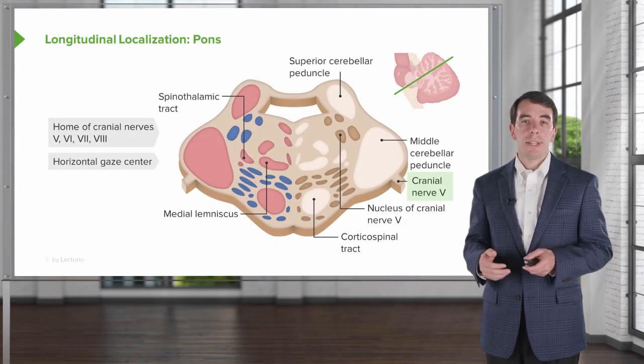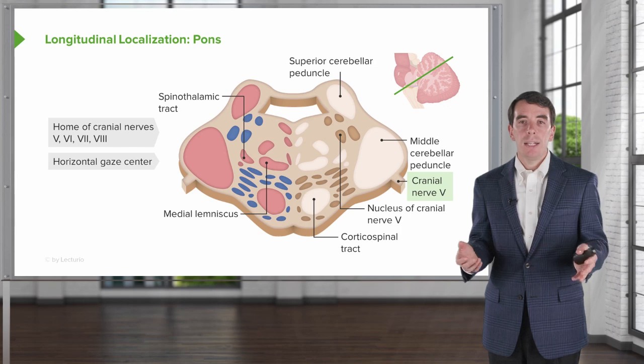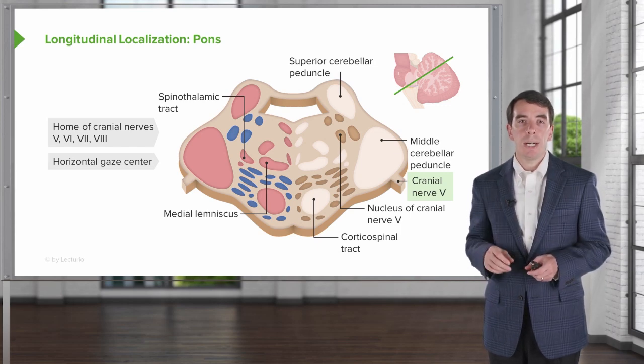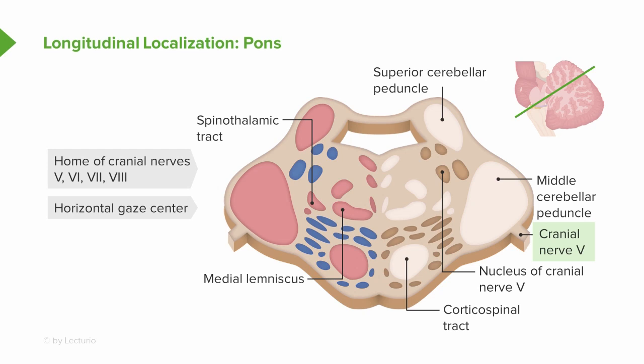Let's go one section down to the level of the pons. The pons is home to cranial nerves five, six, seven, and eight. It is the horizontal gaze center — that's where the PPRF, or the pontine paramedian reticular formation, lives and controls horizontal gaze. In addition, the corticospinal tract runs in the ventral aspect of the pons, which is critical. Medial aspect strokes can cause weakness in this area, and the medial lemniscus runs just dorsally to that.